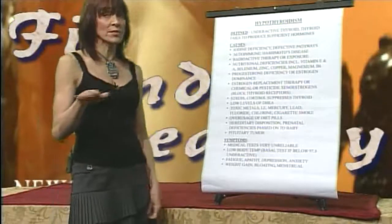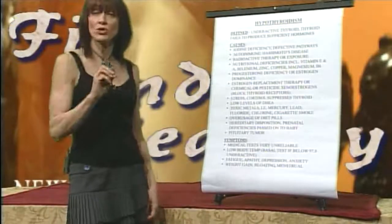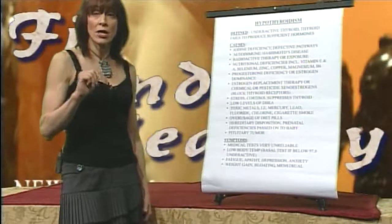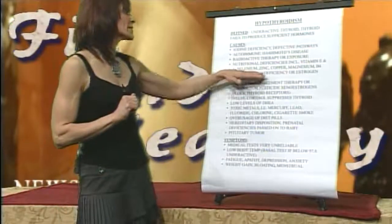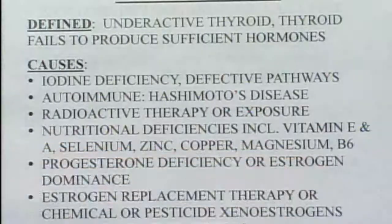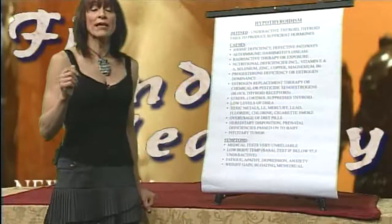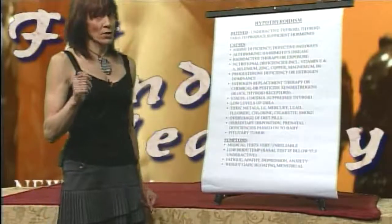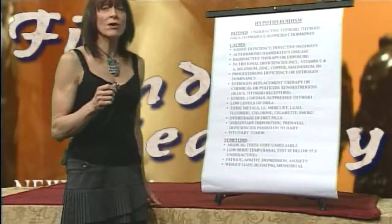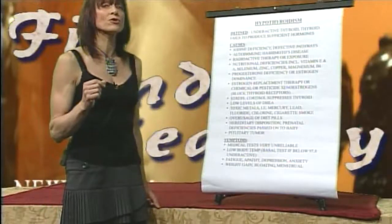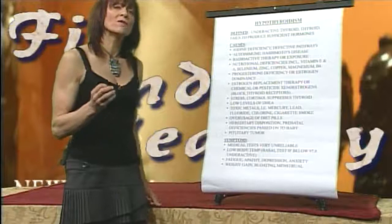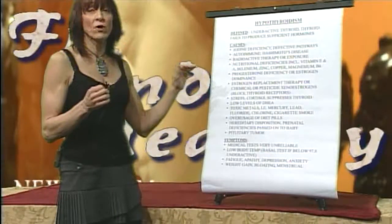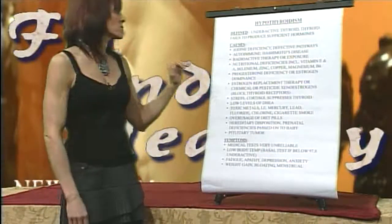95%. So if you're vitamin E deficient, which the majority of Americans are, good luck on iodine uptake. Vitamin A, selenium, zinc, copper, magnesium, B6 — all of these found in a good multiple vitamin that absorbs. Not one from your local grocery store or outlet center. We need a good multiple vitamin rich in absorbable forms of these nutrients.